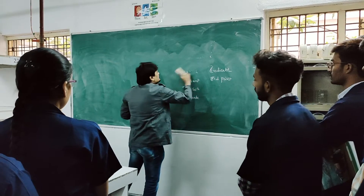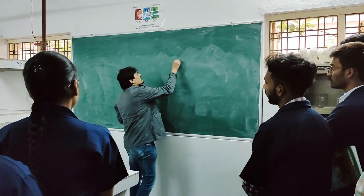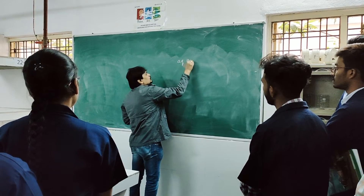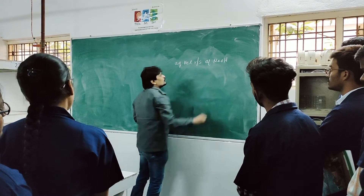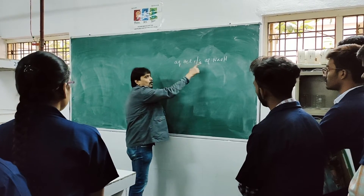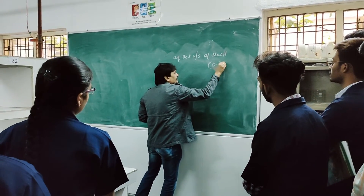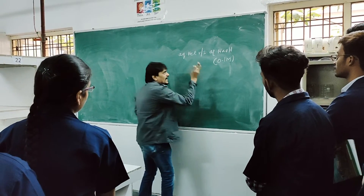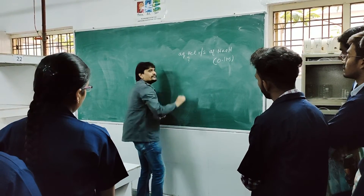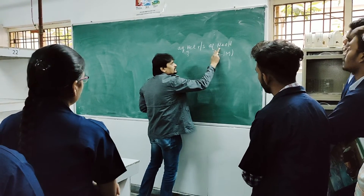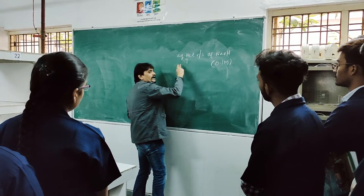Now let us discuss the volumetric analysis terms with an example. Let us say that we are titrating aqueous HCl solution with aqueous sodium hydroxide. Aqueous means the solvent is water. Now let us say that the concentration of this particular solution is known. With the help of the known concentration we are going to determine the concentration of the unknown — that is volumetric analysis. And this process of chemically reacting the solution of known concentration with the solution of unknown concentration is called as titration.